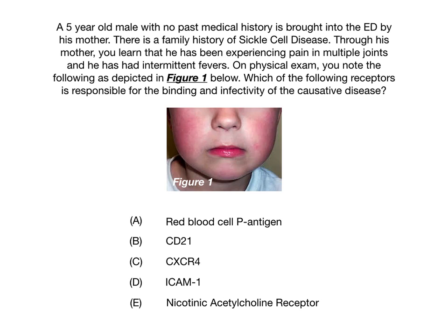The picture from physical exam shows the finding referenced in the question. The answer choices are: A, red blood cell P antigen; B, CD21; C, CXCR4; D, ICAM1; or E, nicotinic acetylcholine receptor.